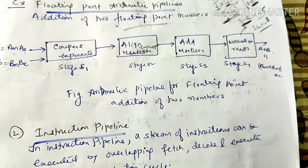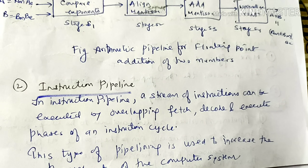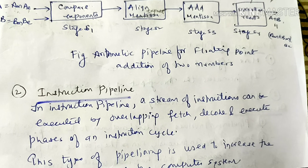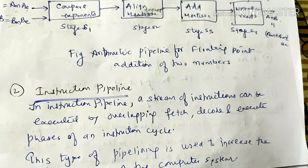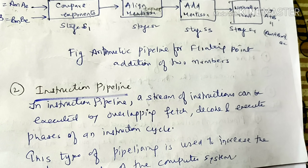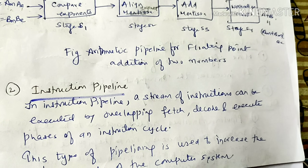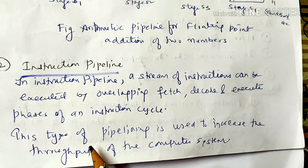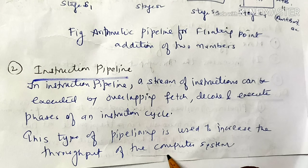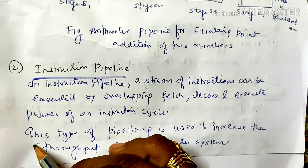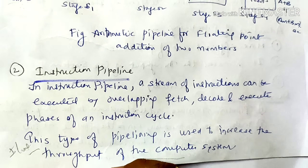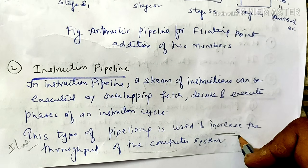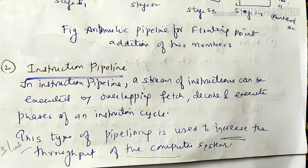The second type is instruction pipeline. In an instruction pipeline, a stream of instructions can be executed by overlapping the Fetch, Decode, and Execute phases of an instruction cycle. This type of pipelining is used to increase the throughput of the computer system — throughput meaning the number of instructions executed per unit time. Pipelining increases throughput because many instructions are executed in overlapping form.